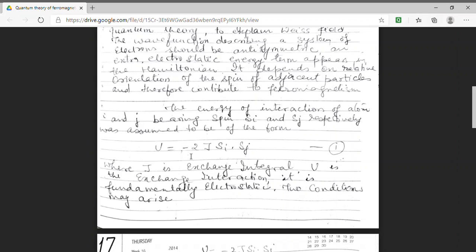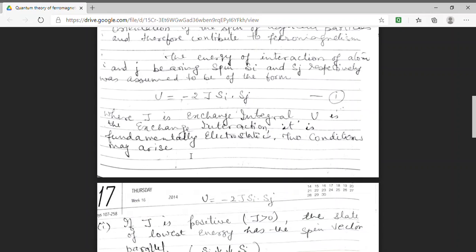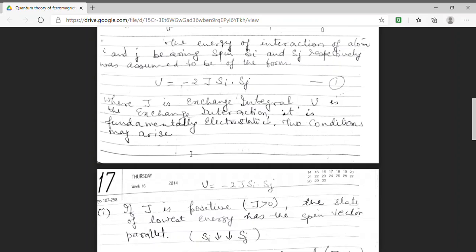Here two situations can arise. In the first case, if I have J to be positive, that is my exchange integral is positive. Now the interaction energy must be negative for a stable condition. For U to be negative and we have J positive, U can only be negative if the two spin vectors are parallel. So the first condition is the state of lowest energy must have spin vectors parallel.